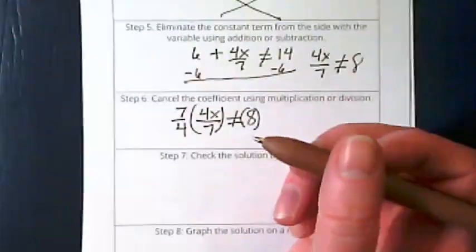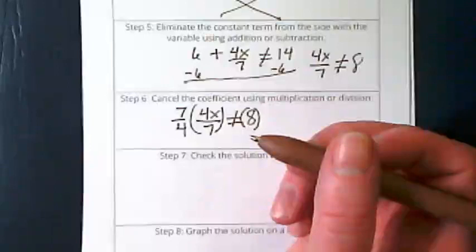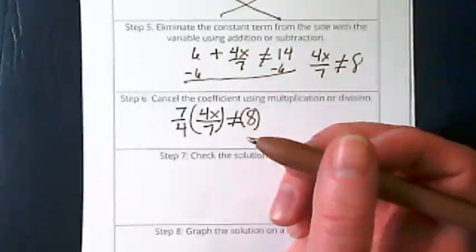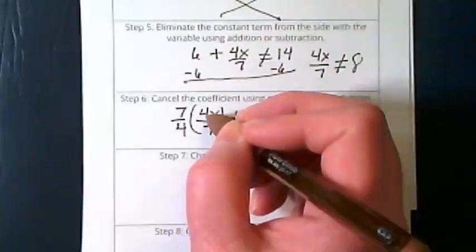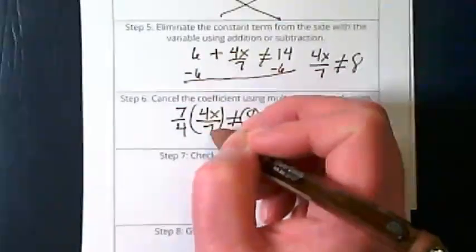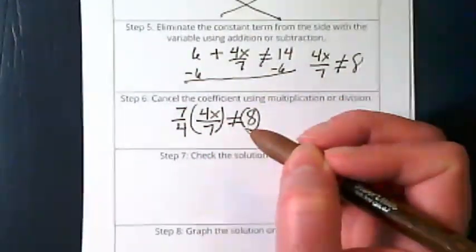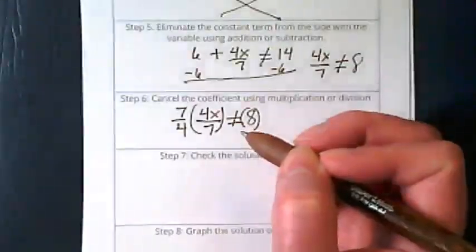We want to turn that into an invisible one. And it's been a few weeks since we've seen something like this. But do you all remember what that does? 7 times 4 is 28. 4 times 7 is 28. Any fraction with a numerator denominator the same is equal to 1.